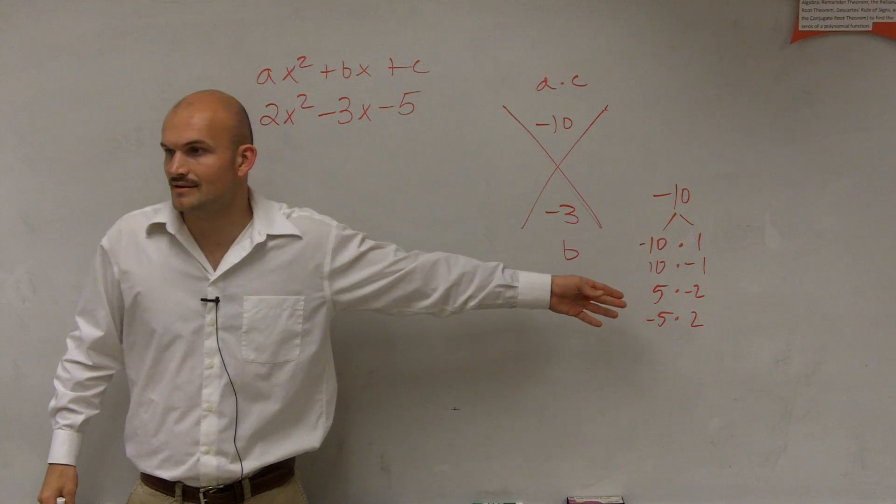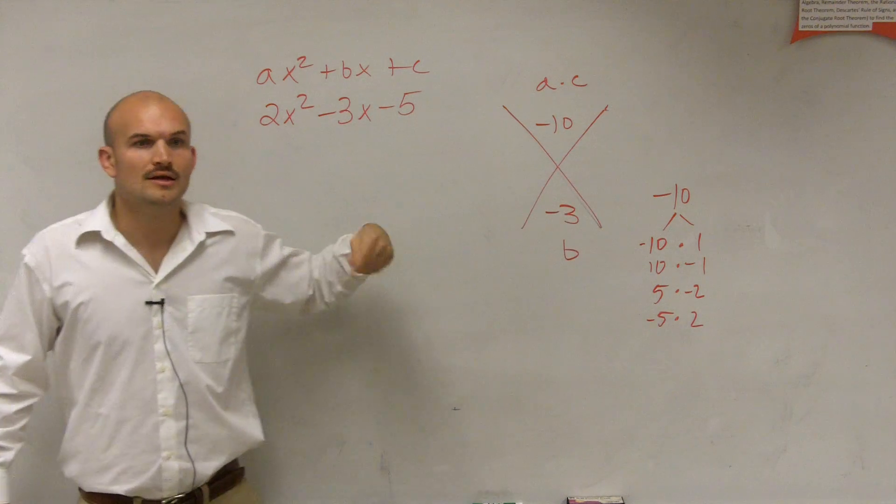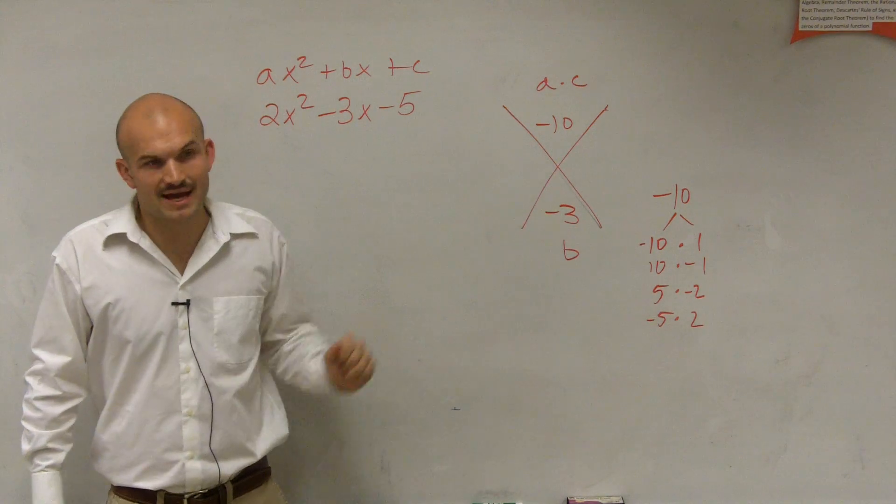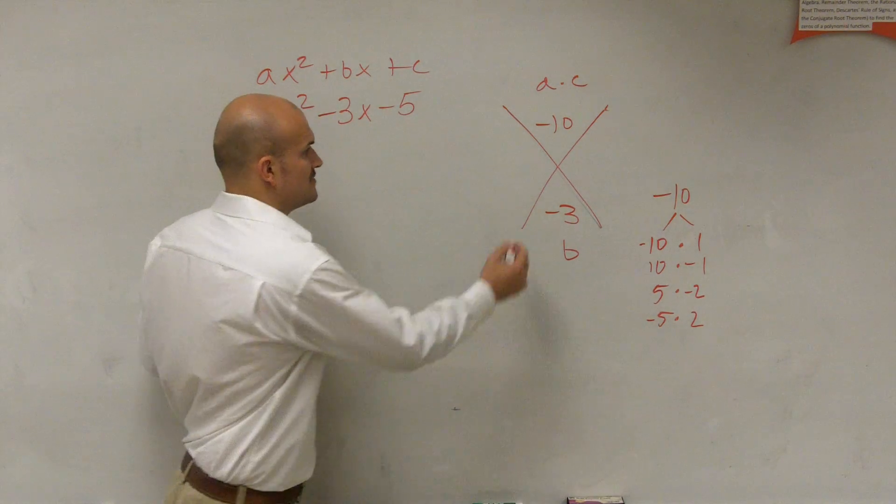So then I look at all my factors. Out of these factors, which one of them add up to give me negative 3? And the only possible solution is negative 5, positive 2.